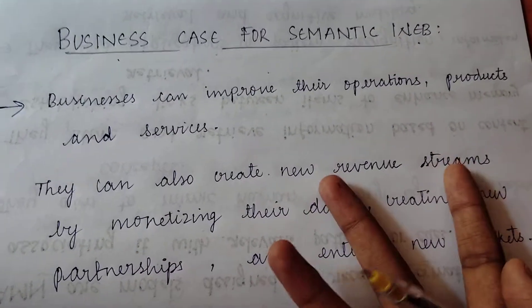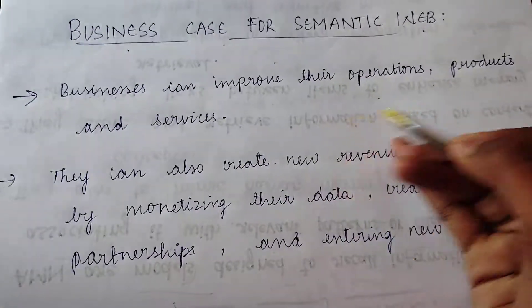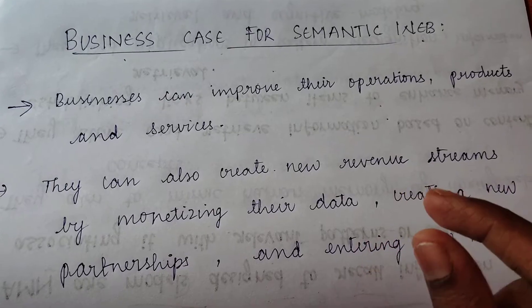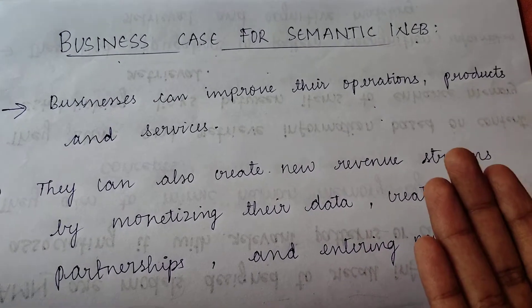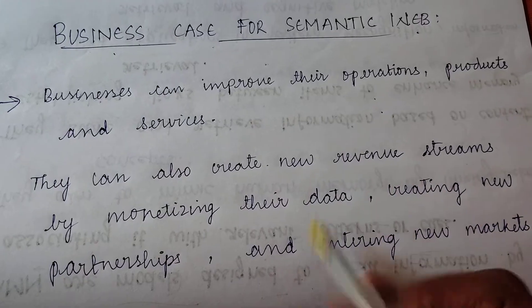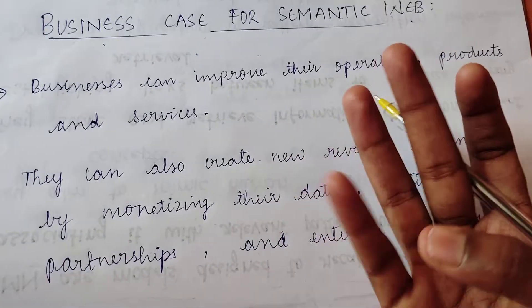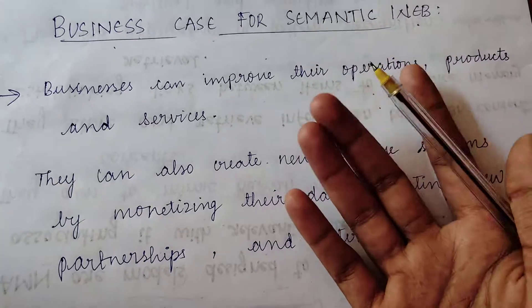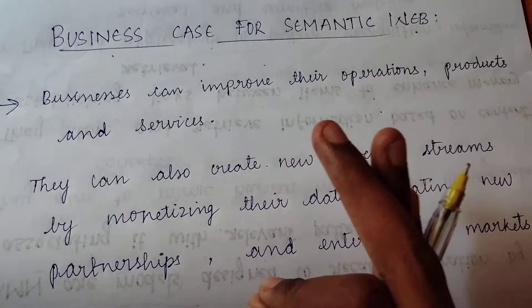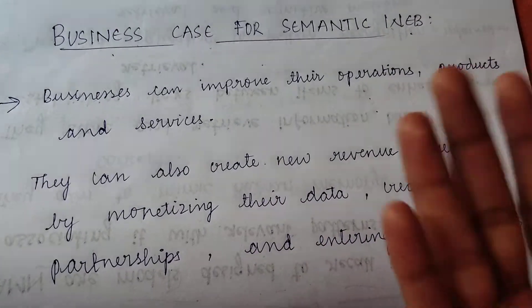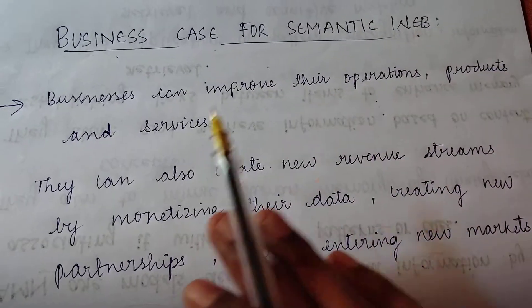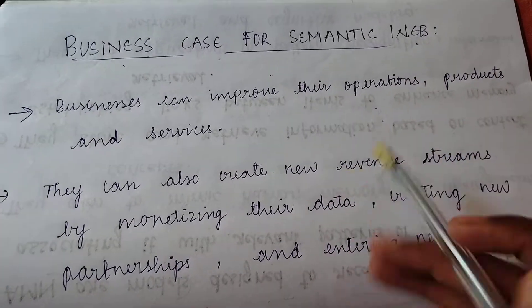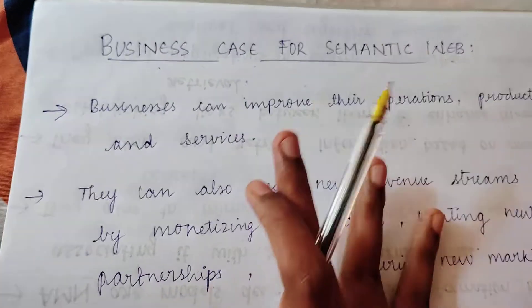For example, if a customer says 'I want white shoes' or 'I want canvas shoes,' we can improve how customers search on our site. We can also provide them with relevant results and recommendations for related products. This will basically increase their satisfaction and loyalty, and there are chances they will be more likely to buy from us again. That is the business case for Semantic Web — how we are using it in business.